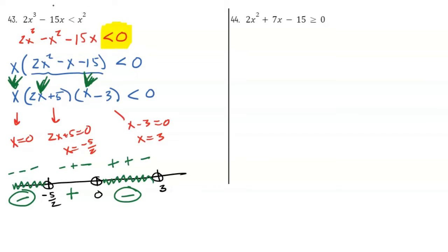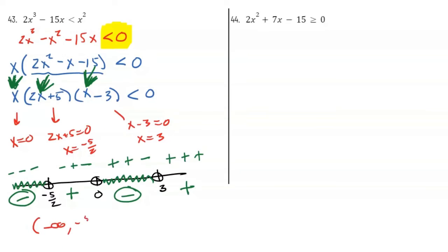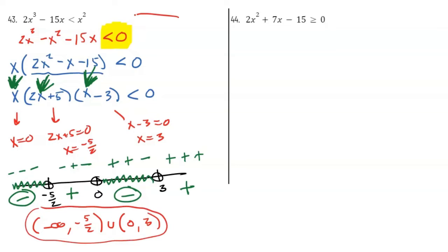I'll do one more: pick any number greater than 3, like 200. Plug in 200: the x factor is positive, (2(200) + 5) is positive, and (200 − 3) is still positive. Positive × positive × positive is positive, and I don't like positives. So my final answer is the interval (−∞, −5/2) union (0, 3). That's the interval that will create all values making my inequality less than zero. That's how you solve a polynomial inequality.